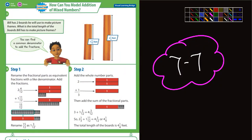Okay fifth graders, we are doing chapter seven, section seven — modeling adding mixed numbers. In this first example, it says Bill has two boards he will use to make picture frames. What's the total length of the boards Bill has to make the picture frames? They have one and eleven-twelfths, and two and one-third. Step one says to rename the fractional parts as equivalent fractions.